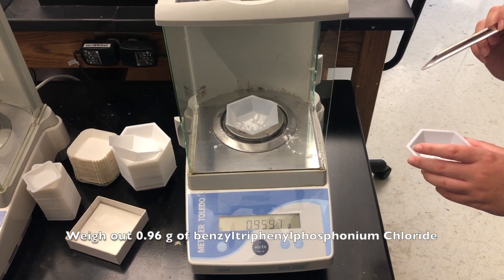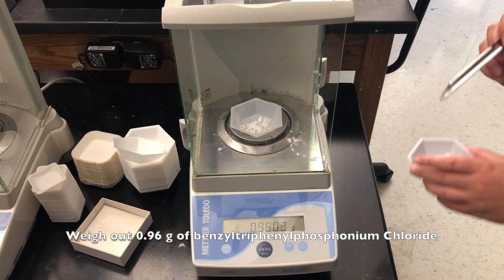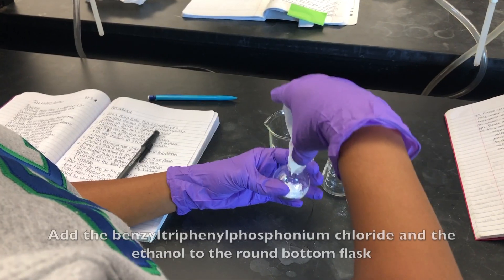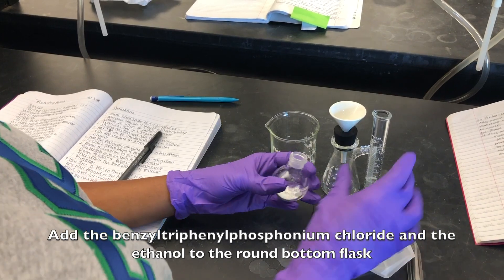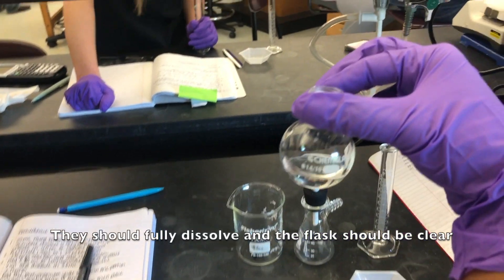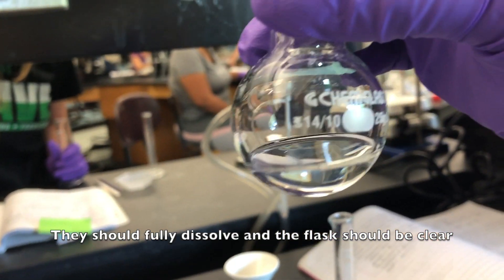Weigh 0.96 grams of benzyltriphenylphosphonium chloride. Add the benzyltriphenylphosphonium chloride and the ethanol to a round bottom flask. They should fully dissolve and the flask should be clear.